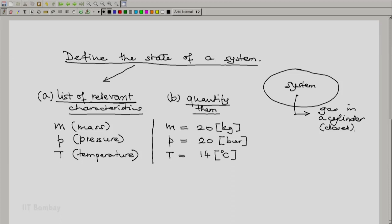So, when we do this, when we have a list of relevant characteristics and the quantity or the numbers associated with them, we say that we have defined the state of our system.